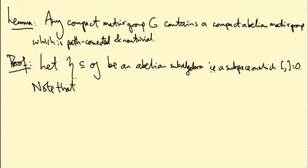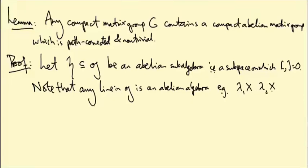First of all, there is an abelian subalgebra that's not just zero. Note that any line in little g is an abelian subalgebra, because if you have a line, two points on the line are just rescalings of each other. So if λ₁X and λ₂X are the elements living on some line, then that bracket is just zero because X commutes with itself. So there exist non-zero abelian subalgebras.